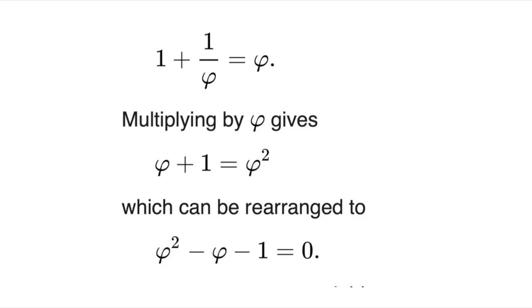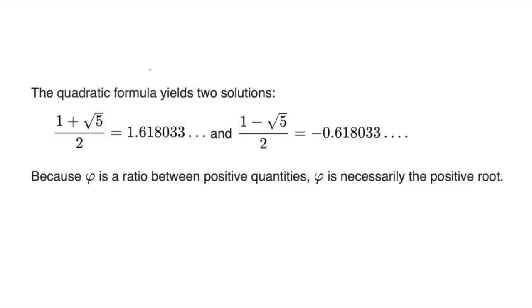From this comes the quadratic equation phi squared minus phi minus 1 equals 0, of which the golden ratio is the positive solution: 1 plus root 5 over 2, which is about 1.618.